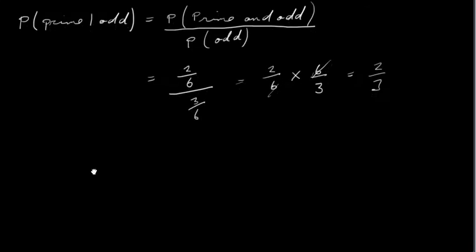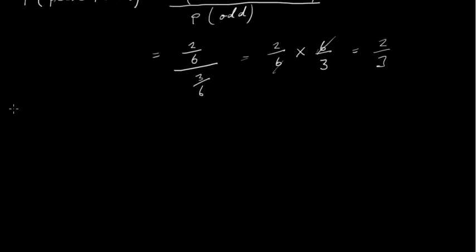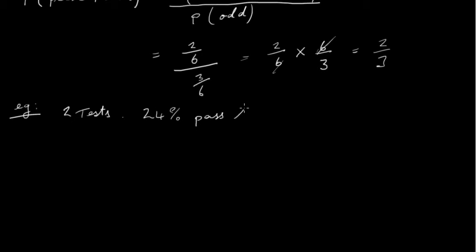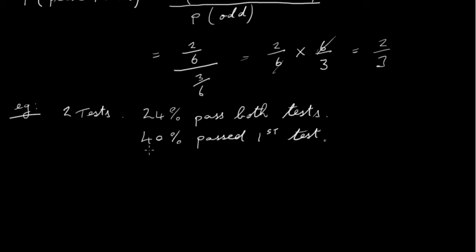That's the first example. Now let's look at another one. In this case, we're looking at a maths teacher who gives two tests. We're told that 24% of the class pass both tests, and 40% of the class passed the first test. We want to know what percentage of those who passed the first test also passed the second test.